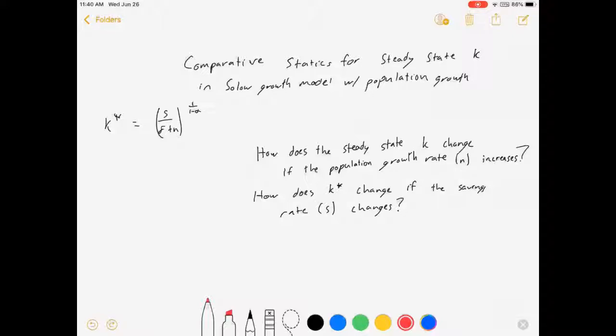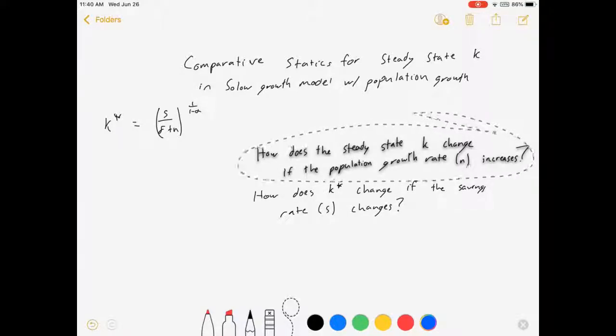So we have this steady state, but now what do we do with it? One question an economist might be interested in is how does the steady state change if population growth rate increases? Why would that matter? It would help guide our investment behavior if people start changing the rate at which they have children.